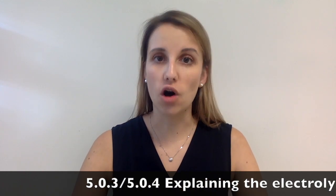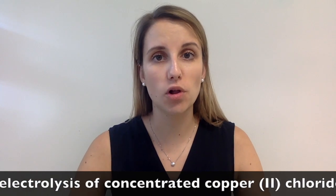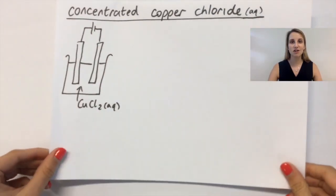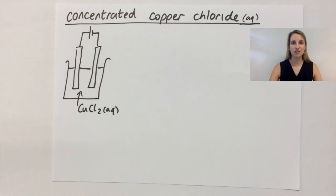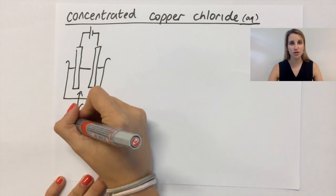Hi guys! Today's video is all about the electrolysis of concentrated copper chloride, but we're using it as an example of an aqueous salt. So all the stuff in today's video can be applied to any other aqueous salt. This is what electrolyzing concentrated copper chloride looks like. What you've got as your electrolyte is your copper chloride, which is aqueous, showing that it's in solution.